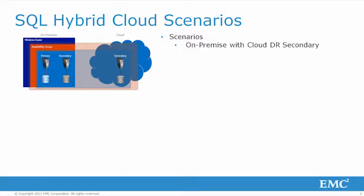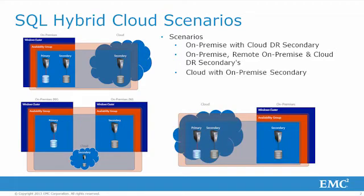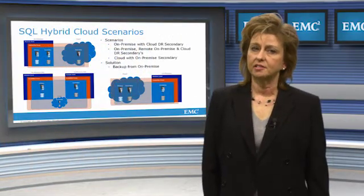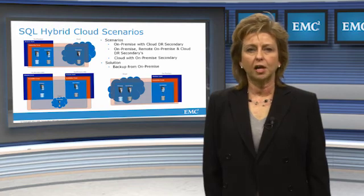Let's review some of the typical deployment scenarios these new SQL capabilities bring to your environment. The most common deployment is hosting a secondary copy of the database in Azure for disaster recovery while still maintaining both a primary and secondary copy on-premise. For those already spanning a SQL Always-On Availability Group deployment across geographic sites, you now have the option of deploying another secondary copy in Azure. And finally, you may choose to run your primary SQL database in Azure along with a secondary copy while retaining yet another secondary in order to take advantage of on-premise data protection services. NetWorker can support all of these scenarios by providing on-premise data protection.